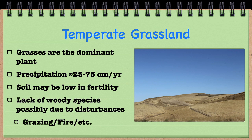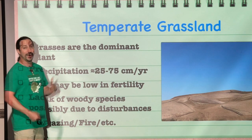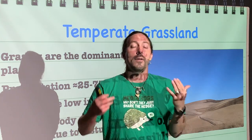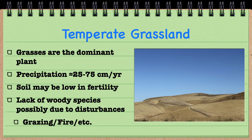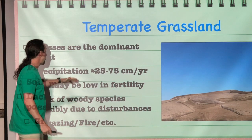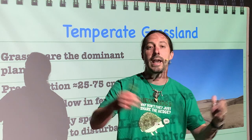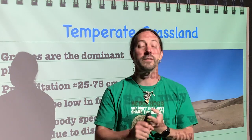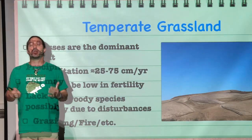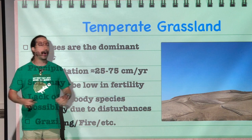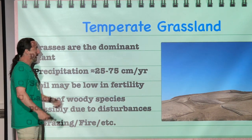Similarly to the temperate deciduous forest, we have the temperate grassland — but grasses, instead of trees, are the dominant species, and there aren't many trees found here. A temperate grassland also has much less precipitation than the temperate deciduous forest, about 25 to 75 centimeters a year. The soil may not have a lot of nutrients, and there is also a prevalence of disturbances such as grazing of animals or wildfires. These disturbances don't harm the grasses nearly as much as they harm woody species, which allows grasses to remain the dominant species in a temperate grassland.